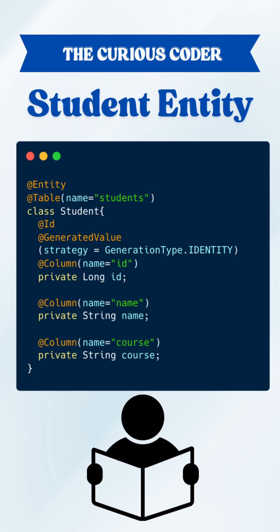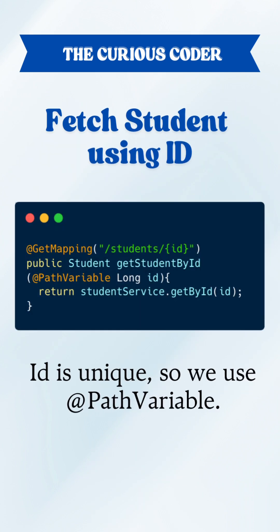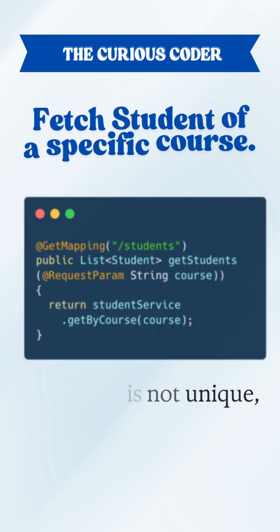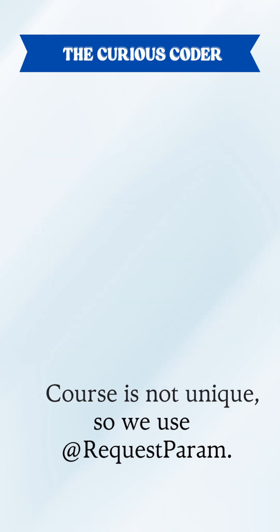Let's take an example with a student entity. Suppose I want to fetch a student by their ID — here the ID is a unique identifier of the student, so we use @PathVariable. Now suppose I want to fetch students of a particular course — here course is not a unique identifier and it's filtering the student data, so we use @RequestParam.